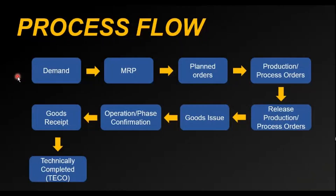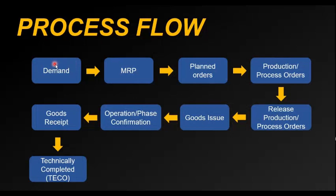The complete end-to-end process of a production cycle basically starts with the creation of a demand and ends with the technical completion of the production order or the process order. The first step is to create a demand. Since we are applying MRP, if MRP is not needed you can skip these steps and directly go to the creation of production orders.